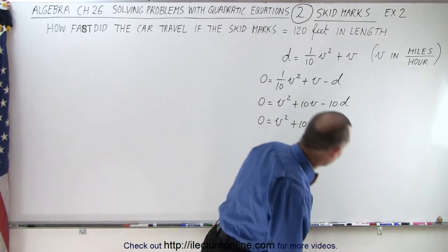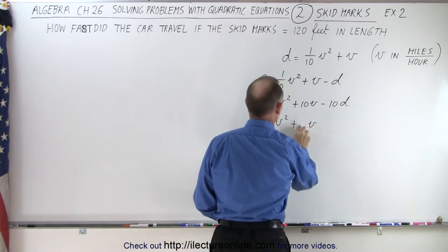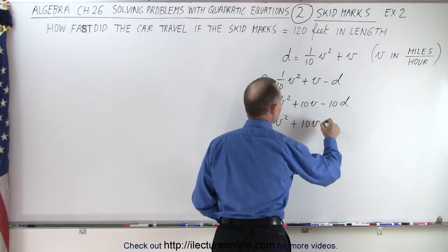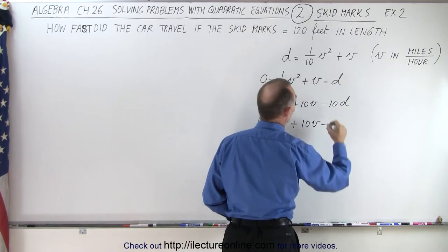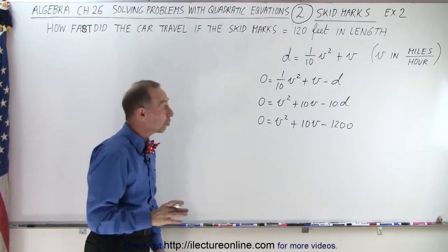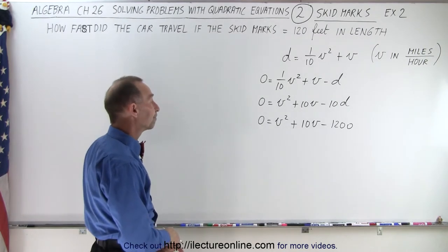So zero equals v² + 10v minus—I say minus and I write equal to. So let's rewrite this here. So plus 10v minus 10 times 120 which is 1200.